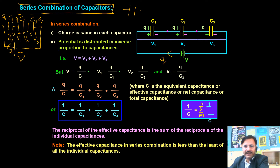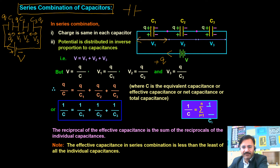The battery supplies charge Q. The positive charge +Q appears on the first plate of C1; due to induction, −Q develops on the opposite plate, then +Q on C2, −Q, +Q, −Q in sequence. The potential difference across C1 is V1, across C2 is V2, and across C3 is V3.